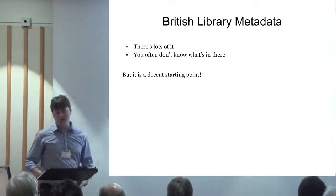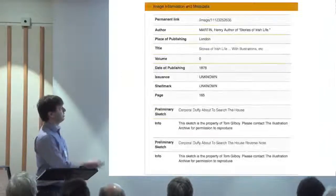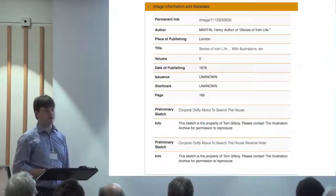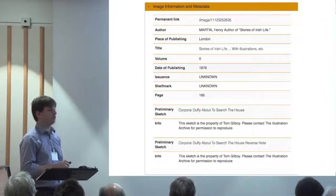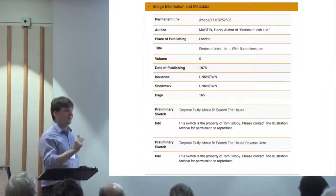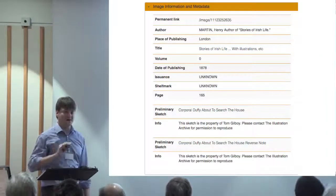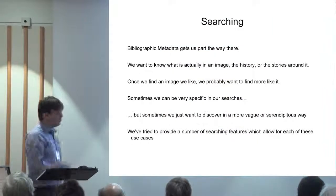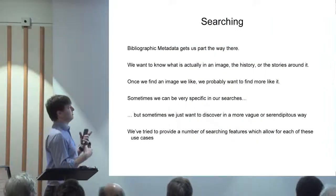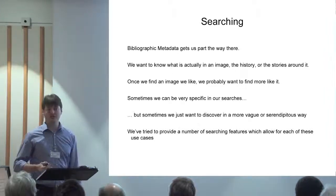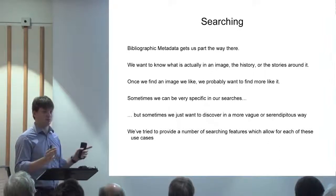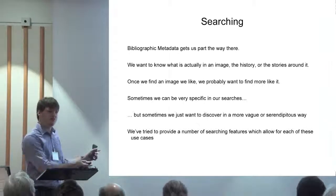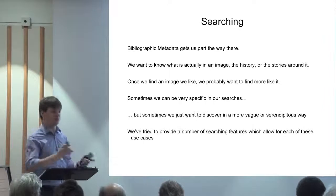So what's in the images? How can we start to find out? The British Library gave us metadata, which is great, but it's primarily about the book. For each image, the only thing we really knew was what page it was from. Different people want to search things in different ways — some want quite vague searches, some very specific searches, and some just want to browse through the images in a serendipitous way: 'that's quite interesting, oh that's quite interesting.'